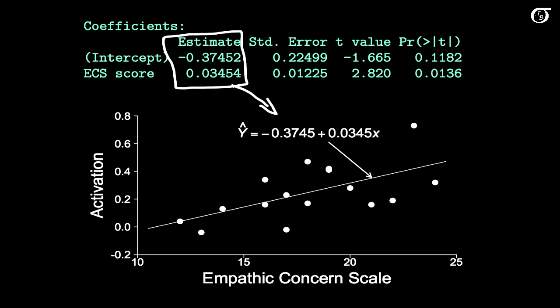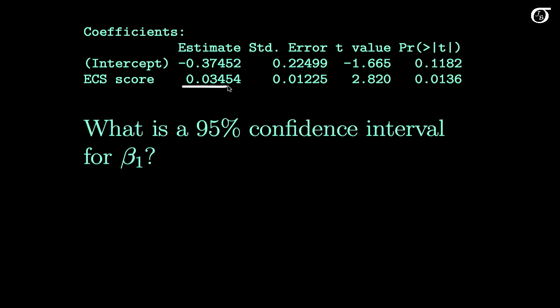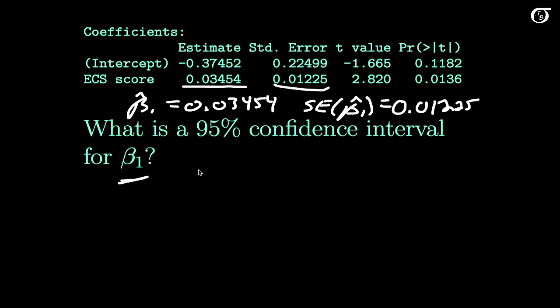So we might want to do a little inference on the slope to see if there is a real effect there, or if it was just very likely to see something like this due to chance alone. First let's look at a confidence interval. Beta 1 hat is given right here as the estimate, so our beta 1 hat is 0.03454. The standard error is given right next to it there. The standard error of beta 1 hat is given right beside as 0.01225. And now I want a confidence interval for beta 1.